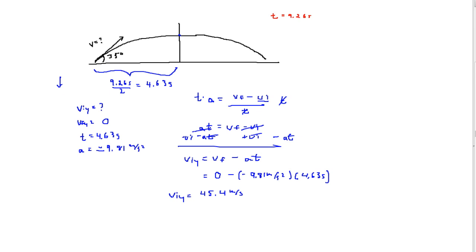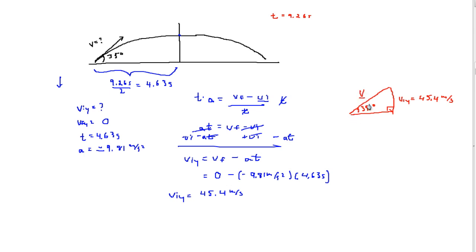Now that we have the y-component, we can determine the answer to the question. I'll draw the triangle of that projectile — here's the right angle triangle with an angle of 35 degrees. We know that V_IY equals 45.4 meters per second, and we want to find V, which is the hypotenuse of the right angle triangle. Since it's opposite over hypotenuse, we use sine: sine of 35 degrees equals 45.4 divided by V.